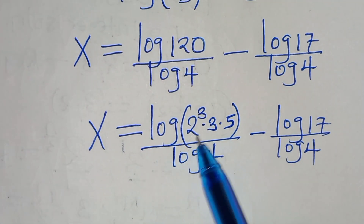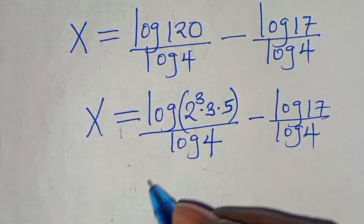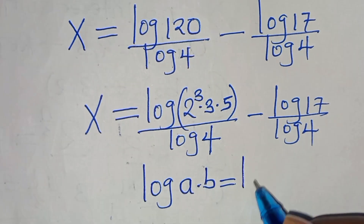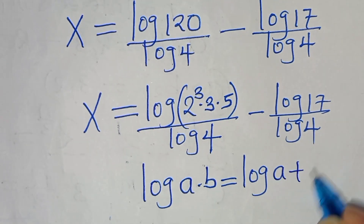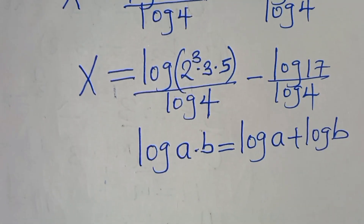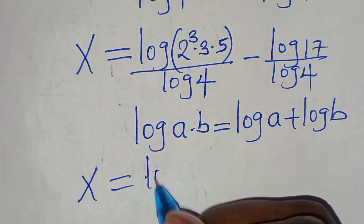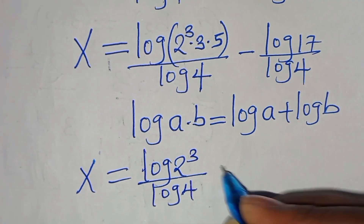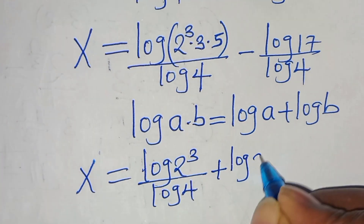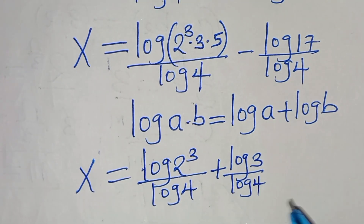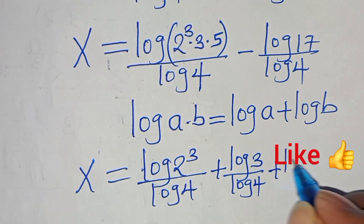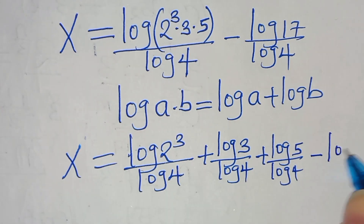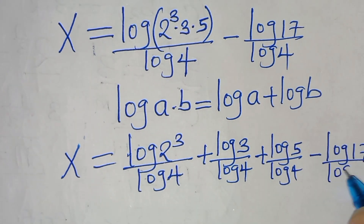Log(2³ × 3 × 5) is in the form log(a times b), which can be expressed as log a plus log b. Therefore x equals log(2³) over log 4, plus log 3 over log 4, plus log 5 over log 4, subtract log 17 over log 4.